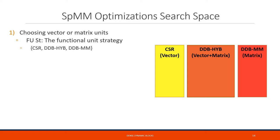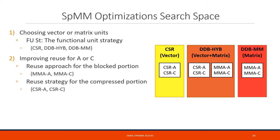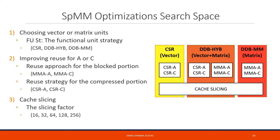When taking all optimizations into account, the search space for an efficient SPMM implementation becomes very large. We need to choose which functional unit to use: on one end we have CSR-based implementation using only vector units; on the other end, DDB-MM uses only MMA units; and DDB-hybrid is in between. Adding register reuse approaches increases complexity further — for CSR and DDB-MM we introduce two more implementations each, while DDB-hybrid has four different implementations combining MMAA, MMAC, CSRA, and CSRC. Cache slicing is applicable to all CSR, DDB-MM, and DDB-hybrid methods.